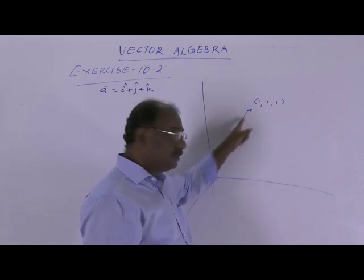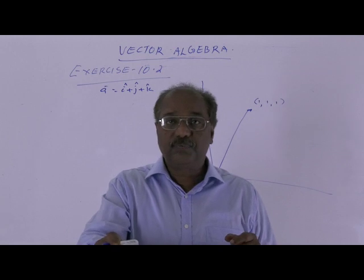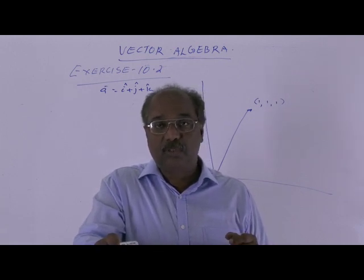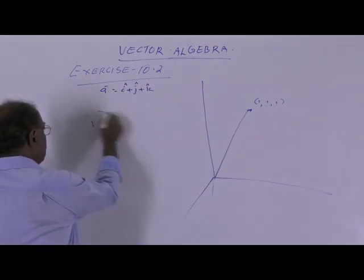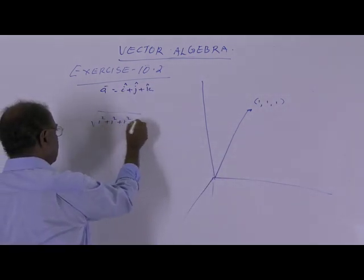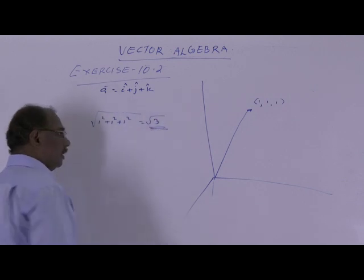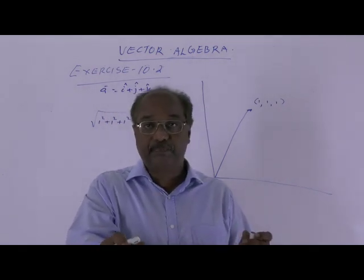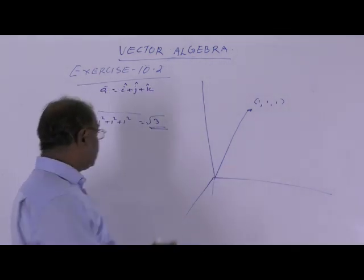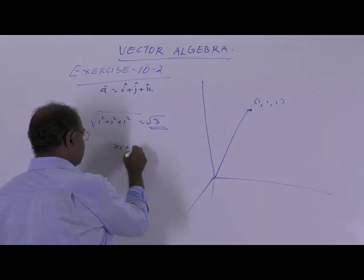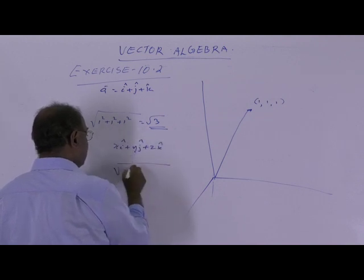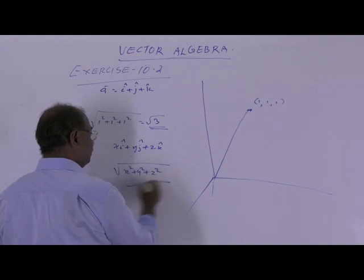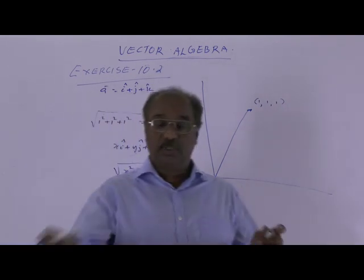That means the magnitude of this vector is root of 1 squared plus 1 squared plus 1 squared, which is equal to root of 3. In general, the magnitude of the vector xi plus yj plus zk is root of x squared plus y squared plus z squared. So the magnitude of the vector a equal to i plus j plus k is root of 3.